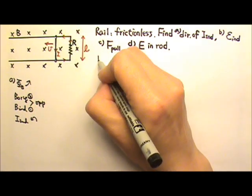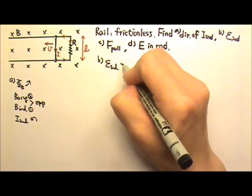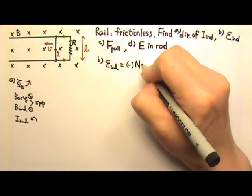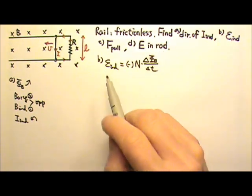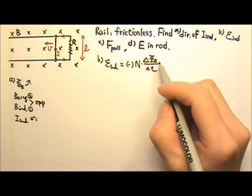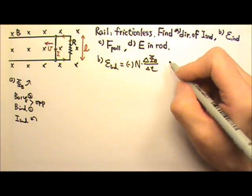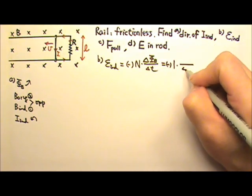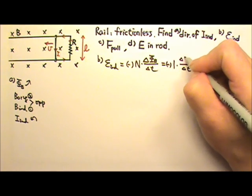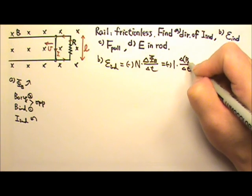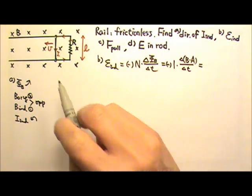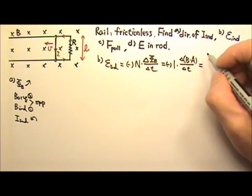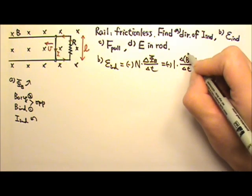To find the induced EMF, I use Faraday's law of induction, although the negative sign in this case is not important. So the induced EMF is negative N times delta phi B over delta T. There is only one loop. And the delta phi B, phi B is B times A. And in this case, the magnetic field is a constant. It is not changing, so I can take the magnetic field out of the delta.